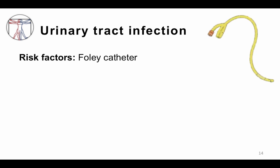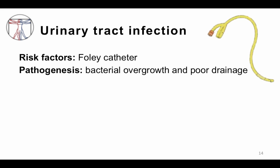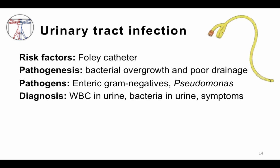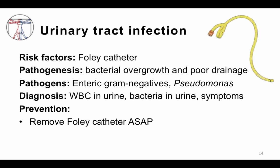Urinary tract infections: the main risk factor for most hospitalized patients is the placement of a Foley catheter. You often get bacterial overgrowth in stagnant and poorly draining urine. Enteric gram-negatives and Pseudomonas are the most common causes, though Enterococcus can also be seen. Diagnosis involves finding white blood cells and bacteria in the urine, usually with symptoms — though in patients unable to report symptoms it can be a diagnosis of exclusion. Prevention: remove Foley catheters and use them only when needed.